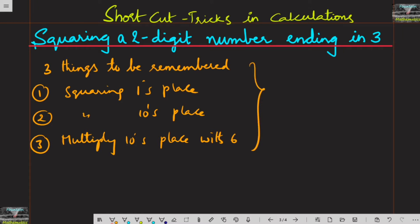Let's try these three things in an example. Take 63 square. 6 square is 36, 3 square is 09, 6 into 6 - take 10's place and multiply with 6 - that's 36.